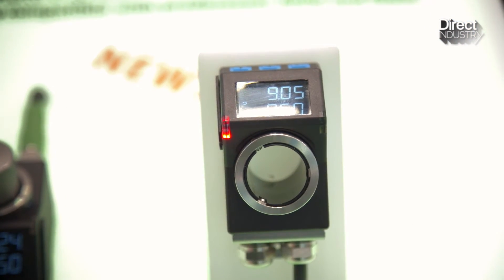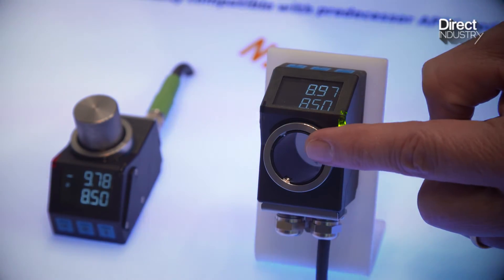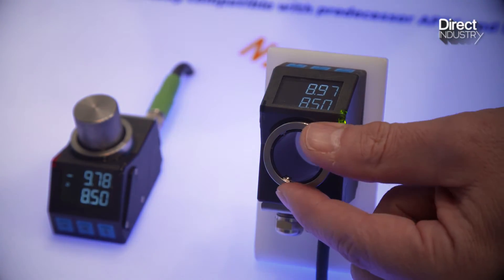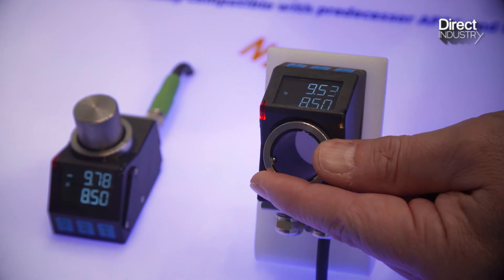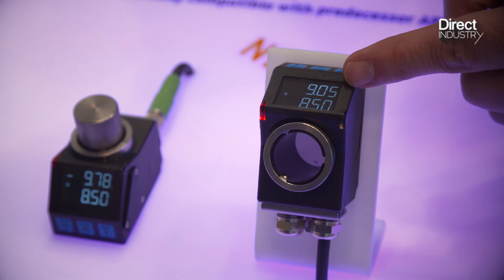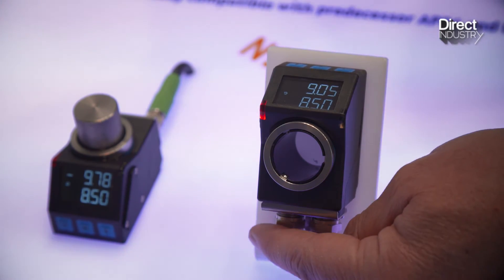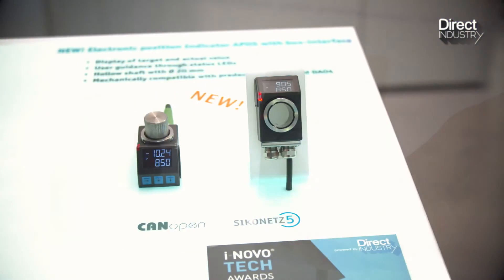The electronic indicator APO5 is equipped with a hollow shaft for an easy mounting on your spindle. With turning the shaft you set up the required position value. You get a two-line display with an actual position value and the target value which is sent through the PLC into the device depending on the recipe.